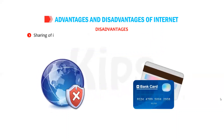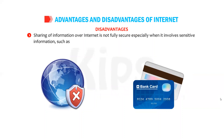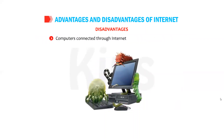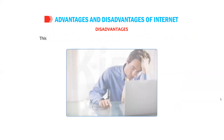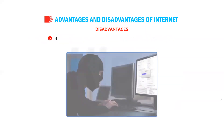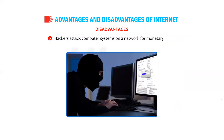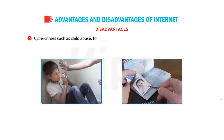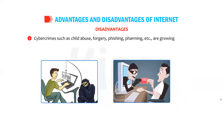Disadvantages: sharing of information over the internet is not fully secure, especially when it involves sensitive information such as credit or debit card details and passwords. Moreover, the information you find on the internet is not always correct and accurate. Computers connected through the internet are prone to virus attacks, which can slow down the system and result in the loss of important data. Hackers attack computer systems on a network for monetary gains, stealing and transferring money from bank accounts. Cyber crimes such as child abuse, forgery, phishing, and pharming are growing day by day.